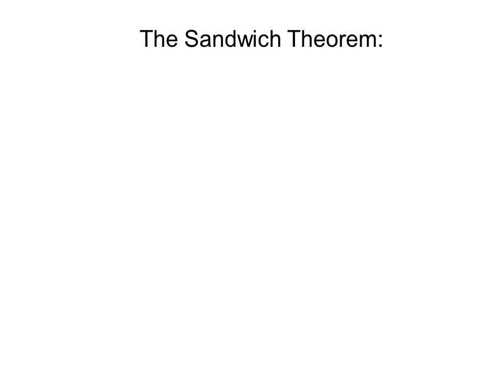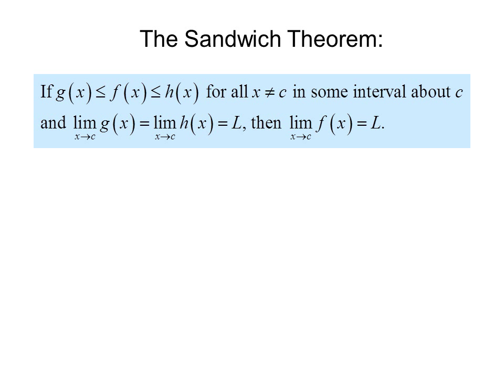The Sandwich Theorem: if g(x) ≤ f(x) ≤ h(x) for all x not equal to c in some interval about c, and the limit as x approaches c of g(x) equals the limit as x approaches c of h(x) equals L, then the limit as x approaches c of f(x) equals L. The key idea is that f(x) is always between g(x) and h(x), and so if the limit of g(x) and the limit of h(x) approach the same thing, f(x) is stuck in the middle.